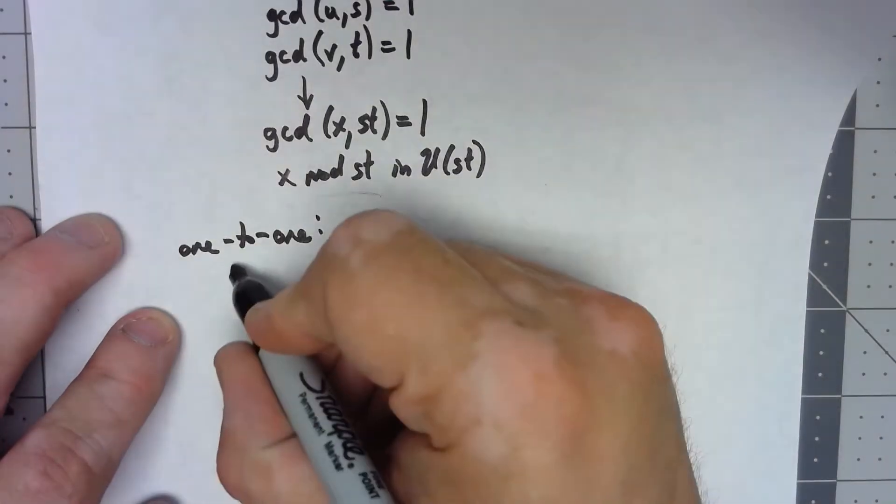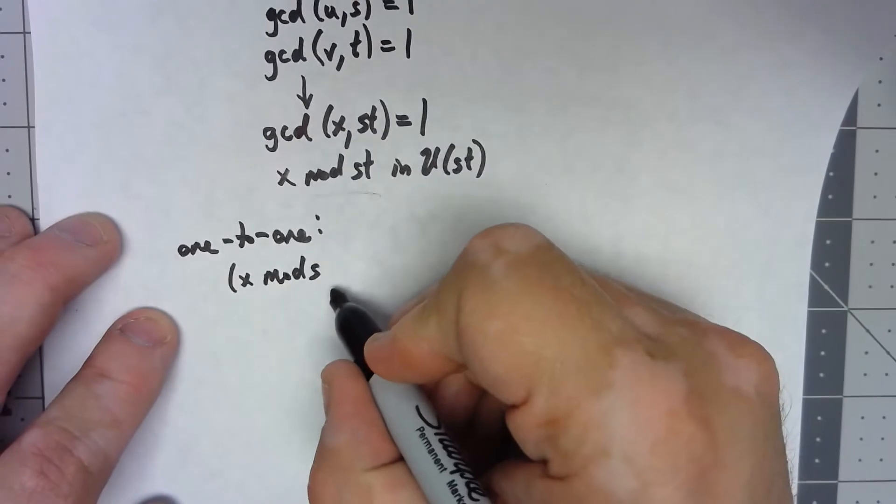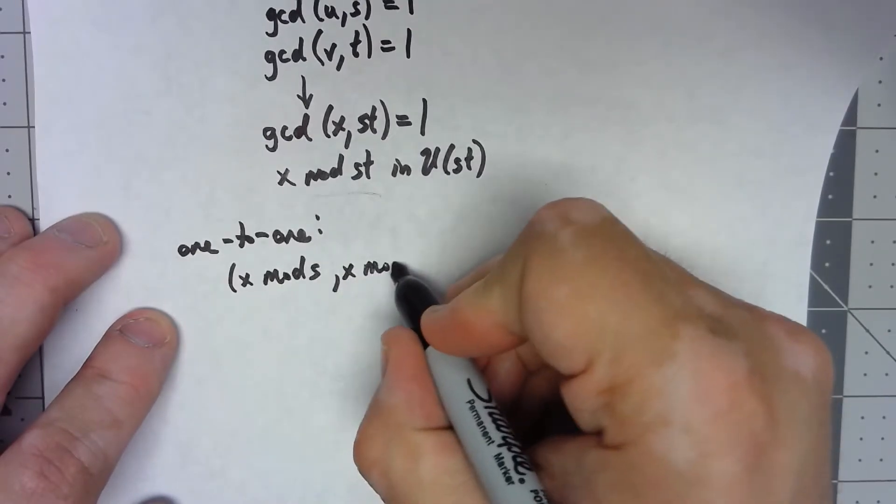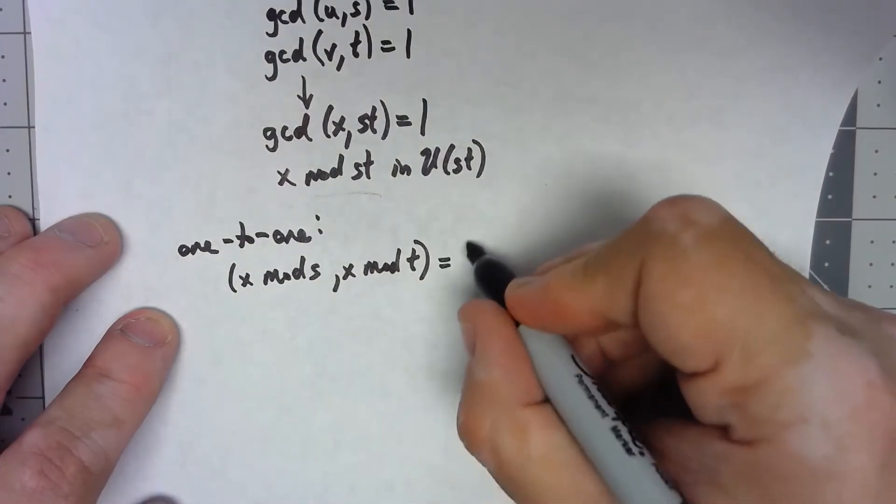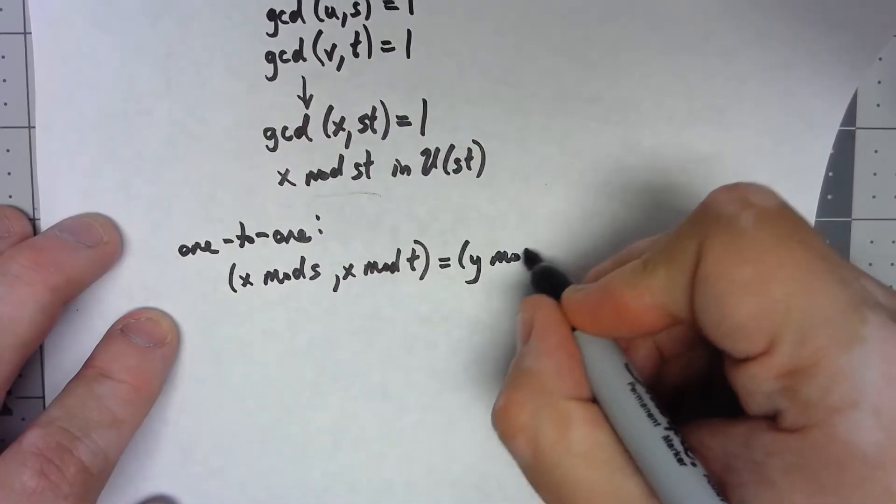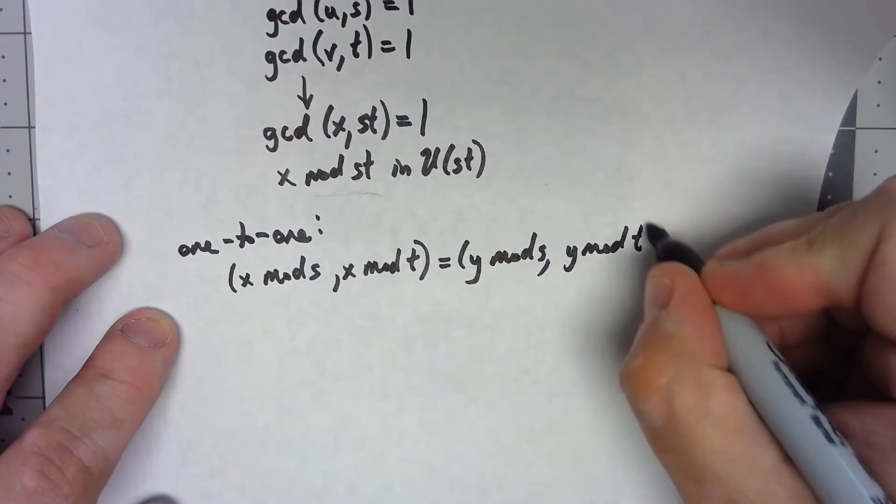To show that, let's suppose that (x mod s, x mod t) was equal to (y mod s, y mod t).